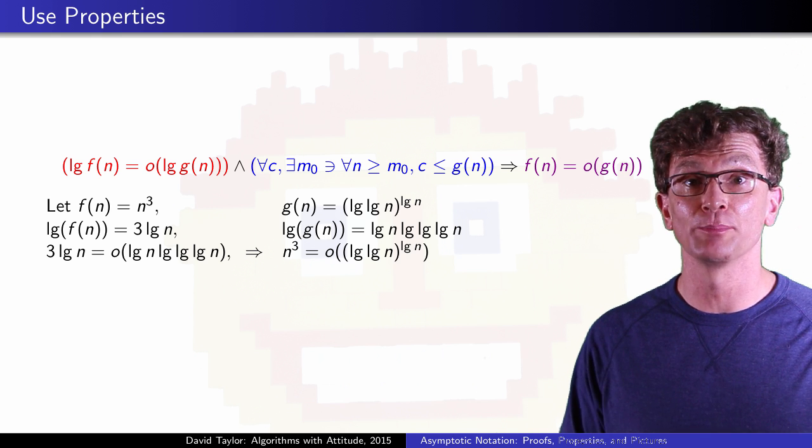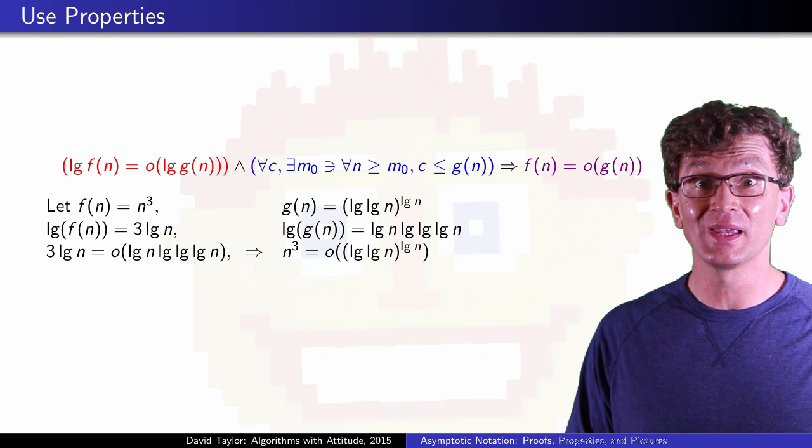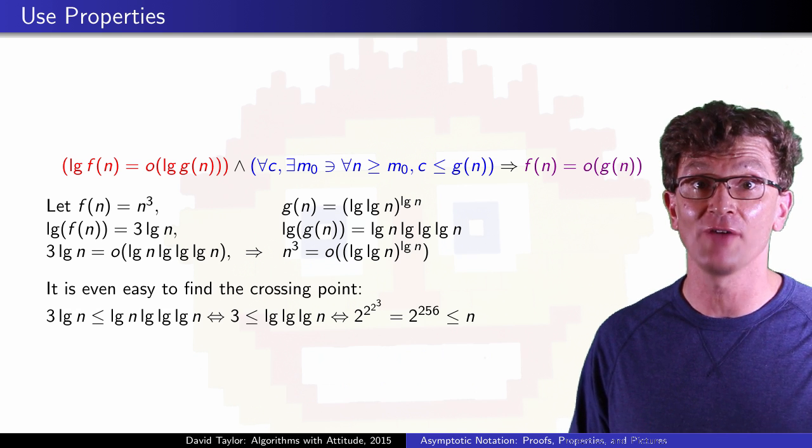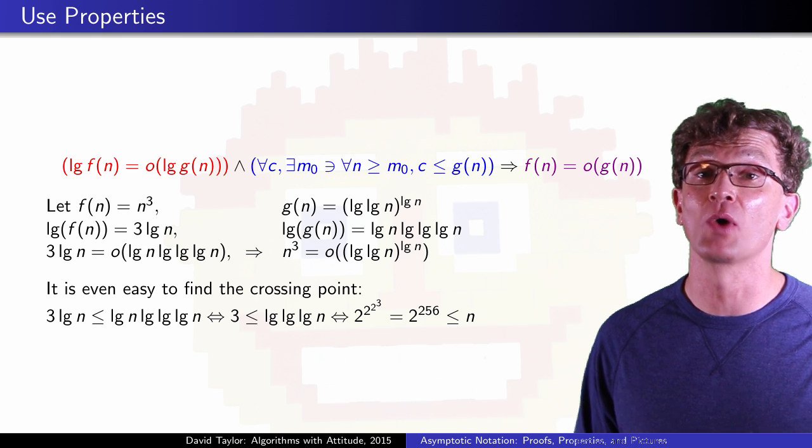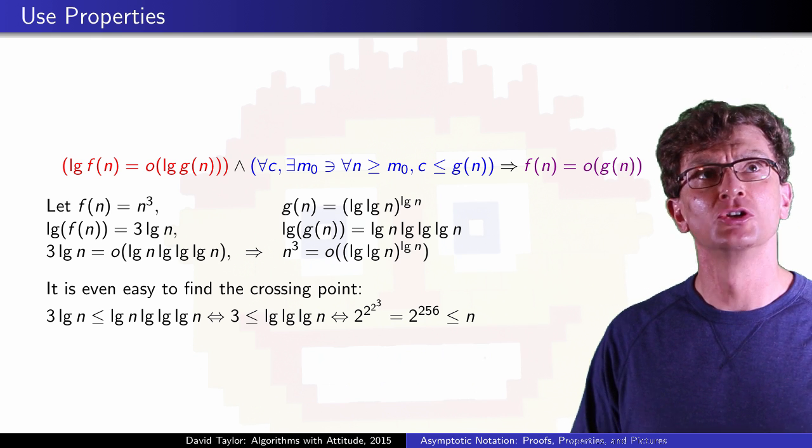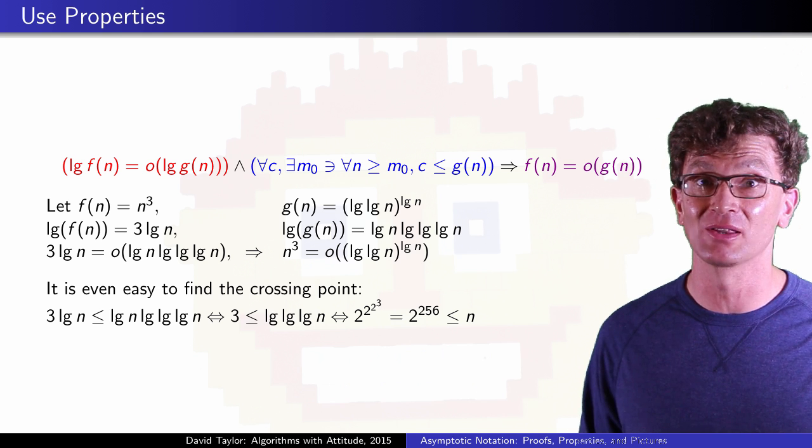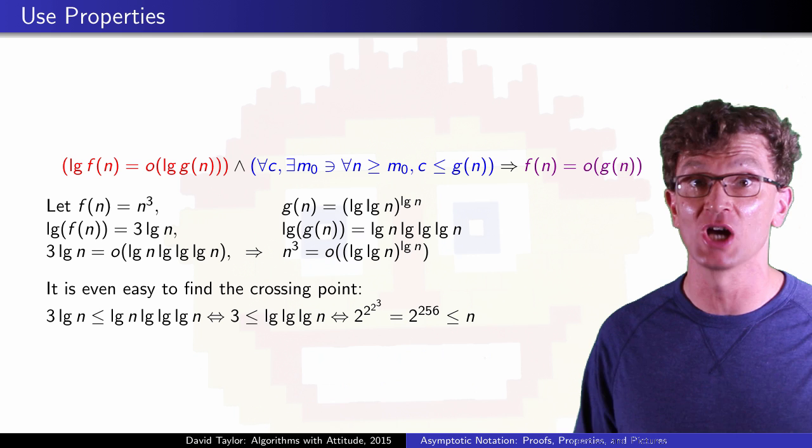Here, everything has been simplified so much that we can even see the crossing point, where g passes f. It happens if n is greater than or equal to 2 to the 256. But nobody is going to plot the graph that far out.